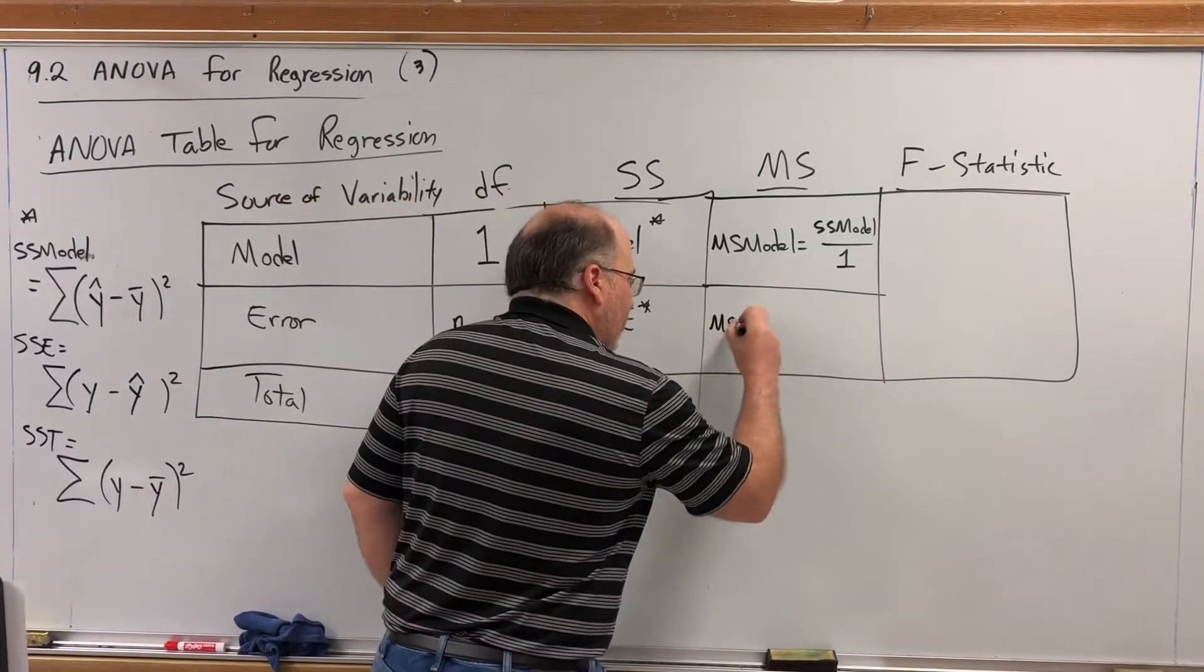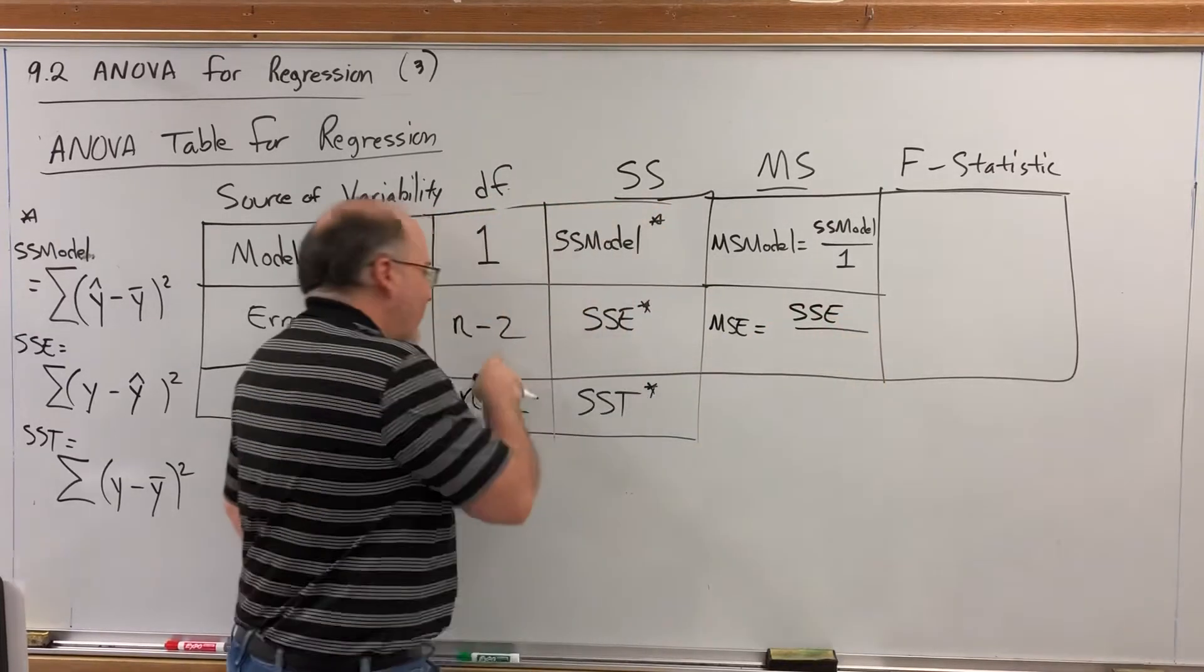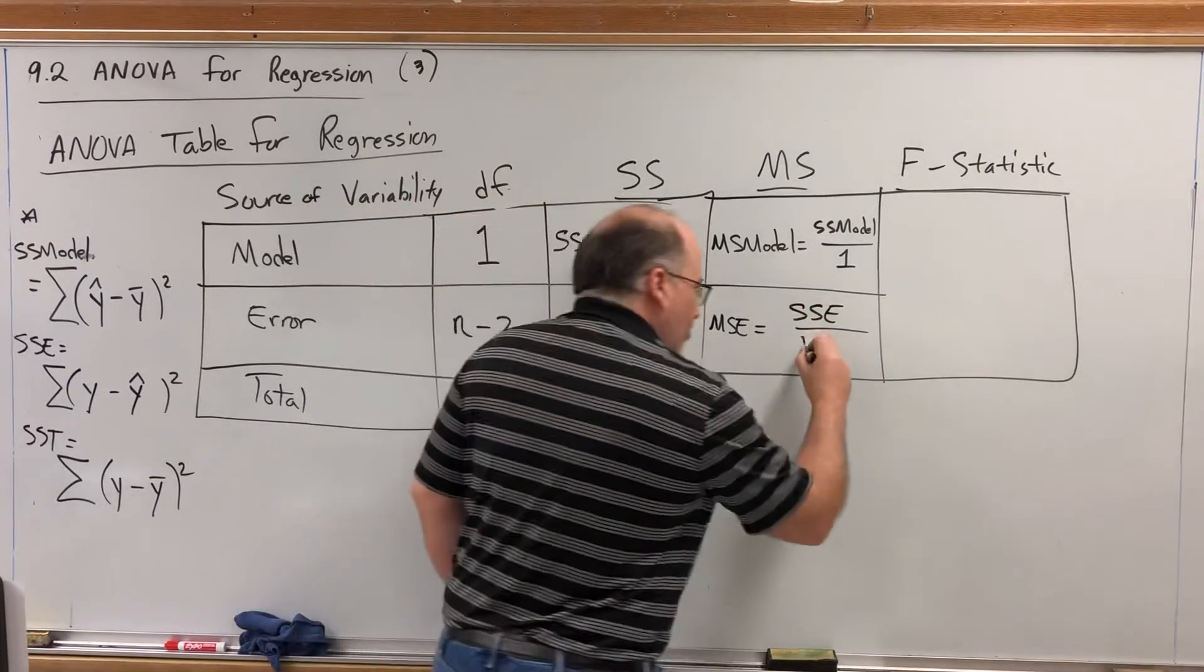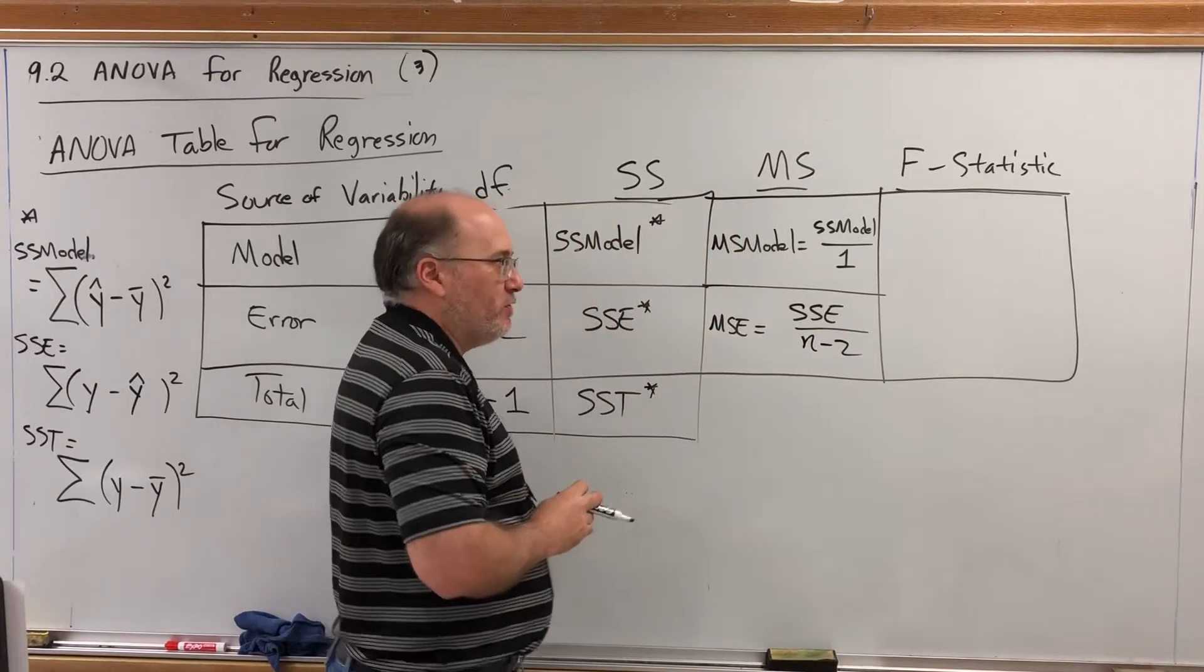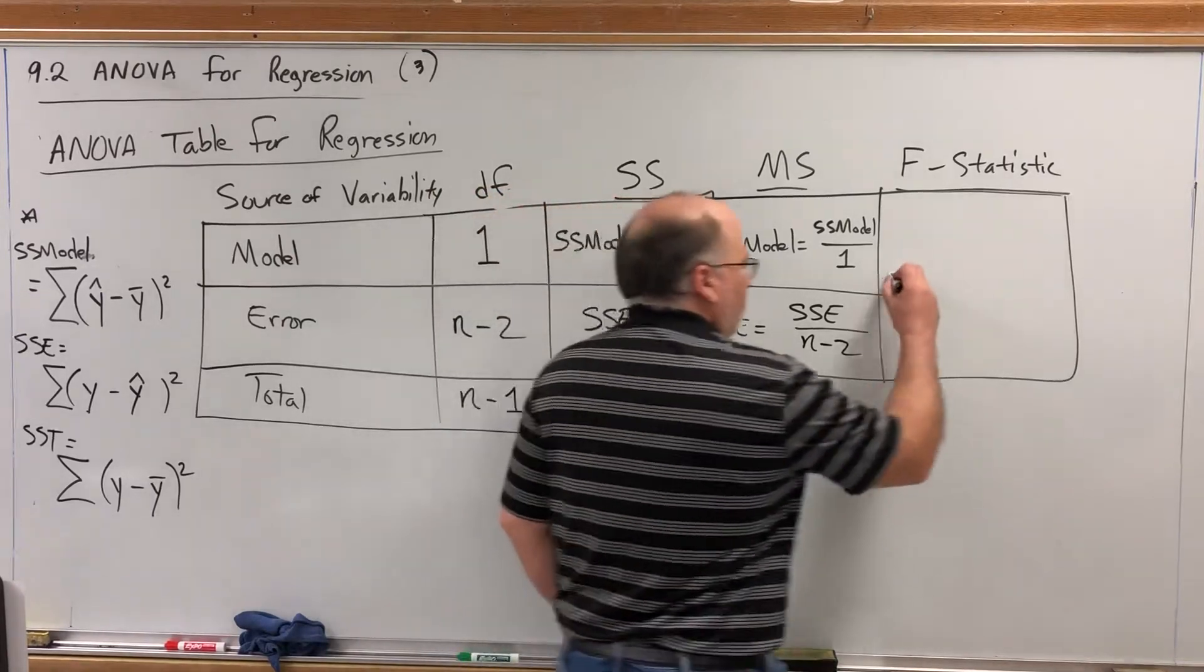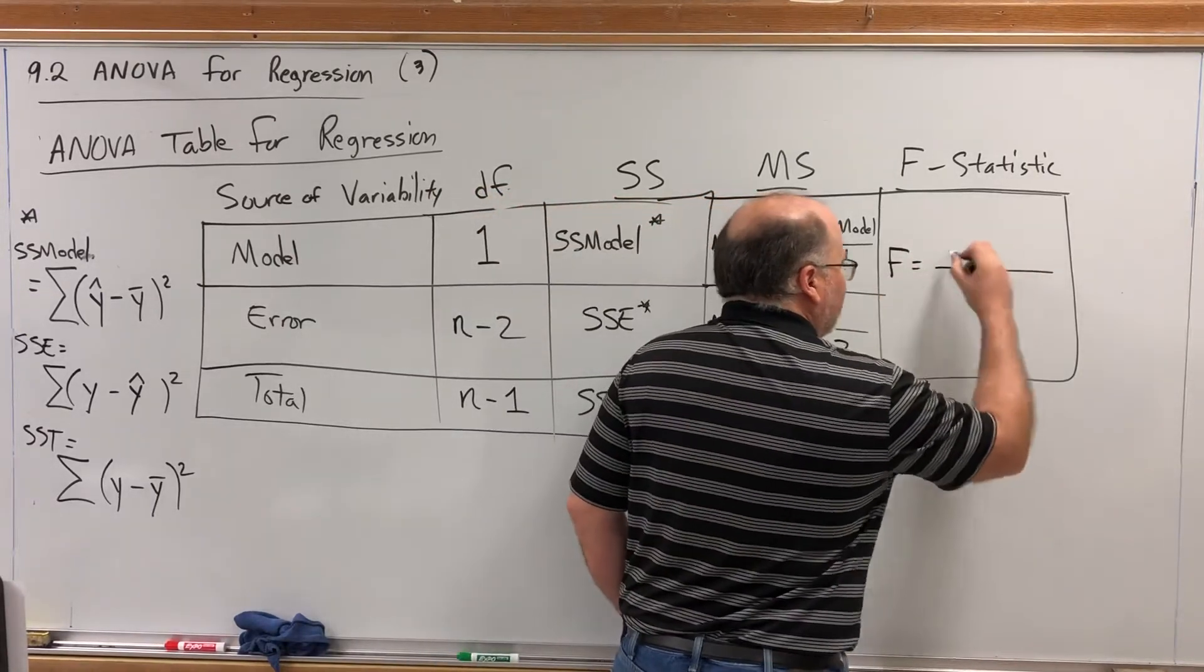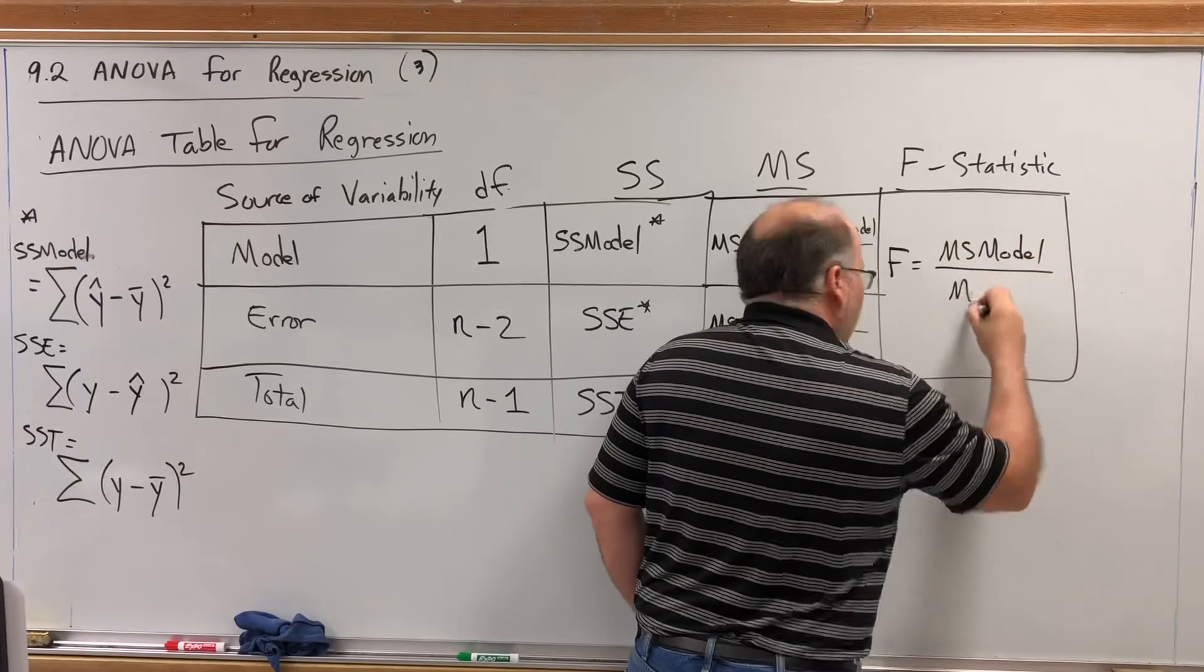The mean sum of squares for errors is the sum of squares for errors divided by its degrees of freedom, n minus 2. And as before, the F statistic, because remember we're doing a hypothesis test. The F statistic is just the ratio of the MS's. MS model over MS error.